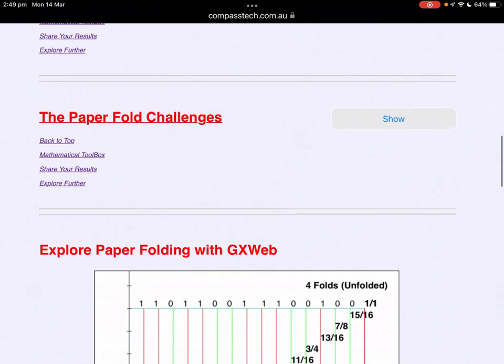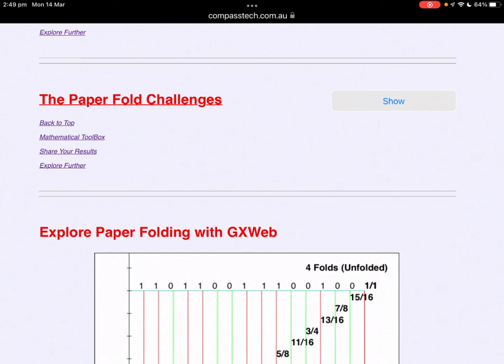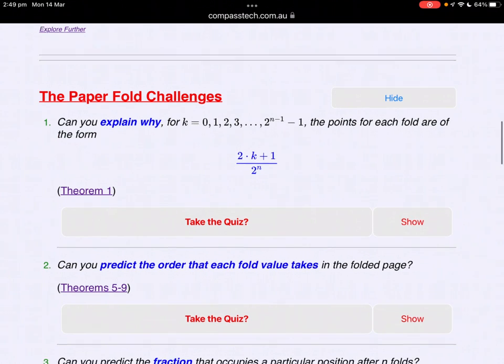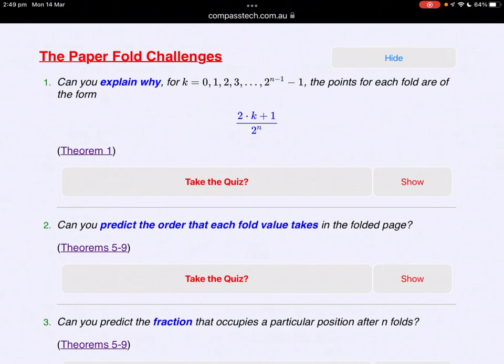For this, we've got some simple paper fold challenges. These are intended to guide you or your students through some of the questions, some of the interesting elements of this paper fold. For instance, the first is, can you explain why, for integer values, the points for each fold are of the form 2k + 1 over 2^n?